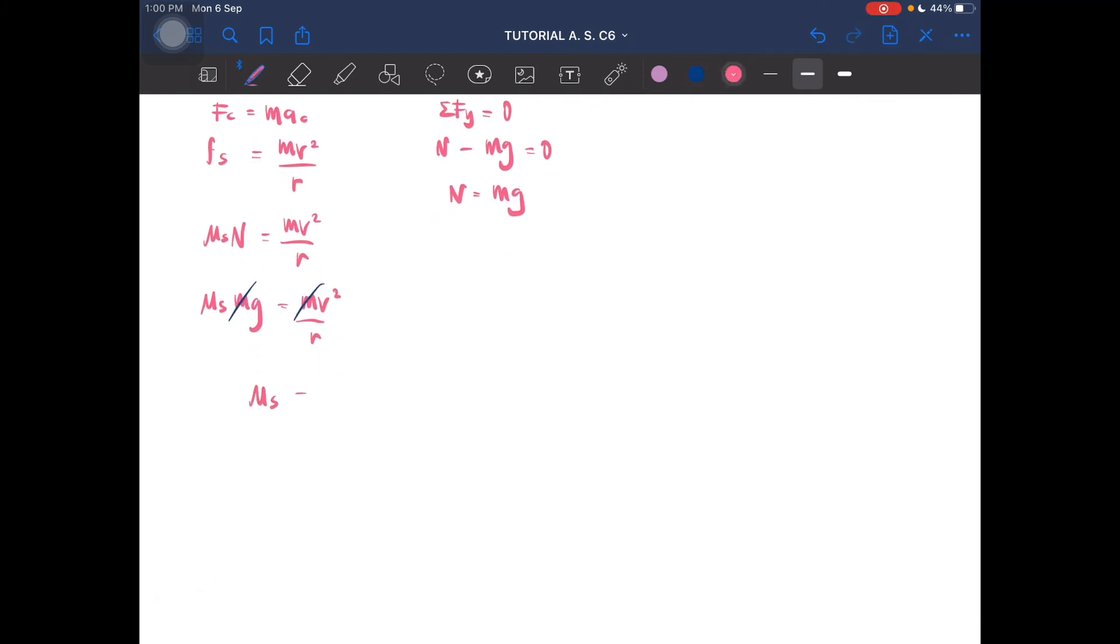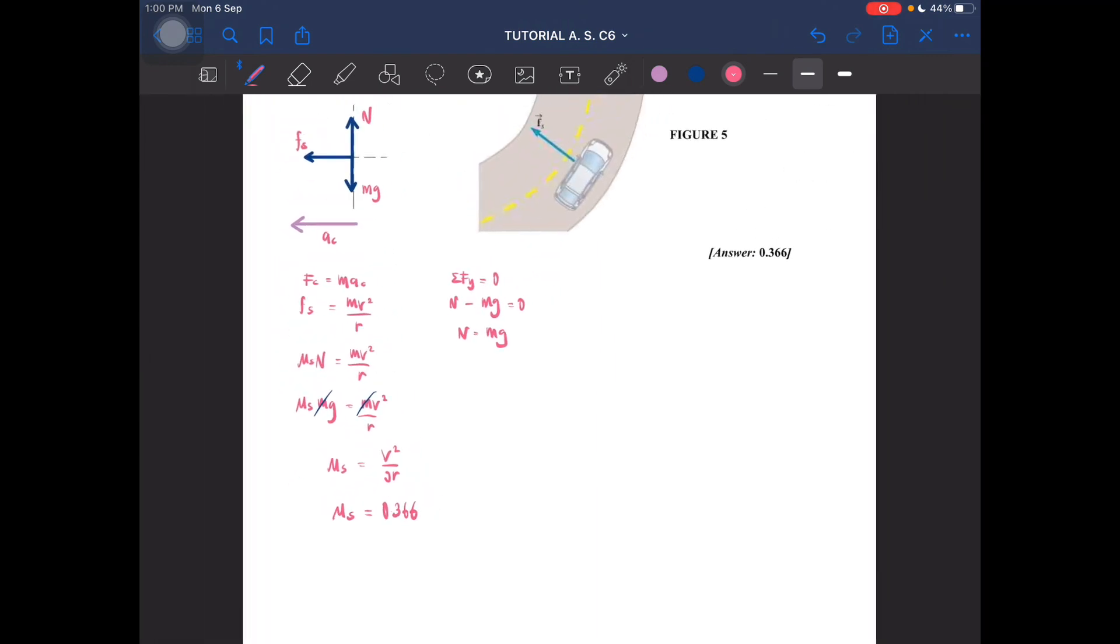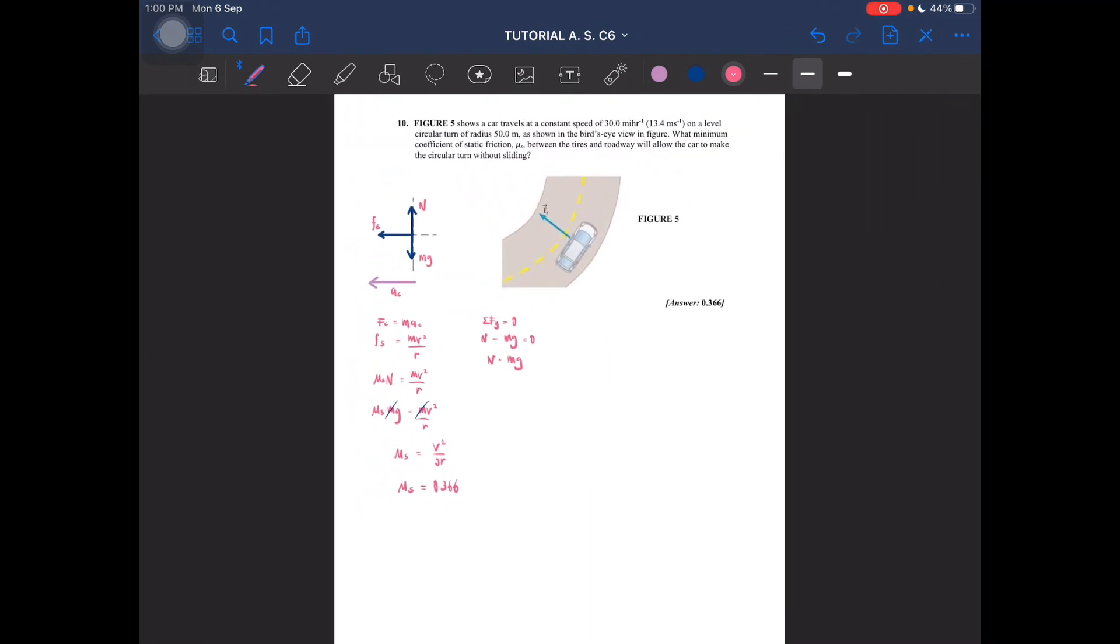So μs is equal to v squared over rg. So the coefficient of static friction you should be getting is equal to 0.366. Okay, so that is the solution for question number 10.